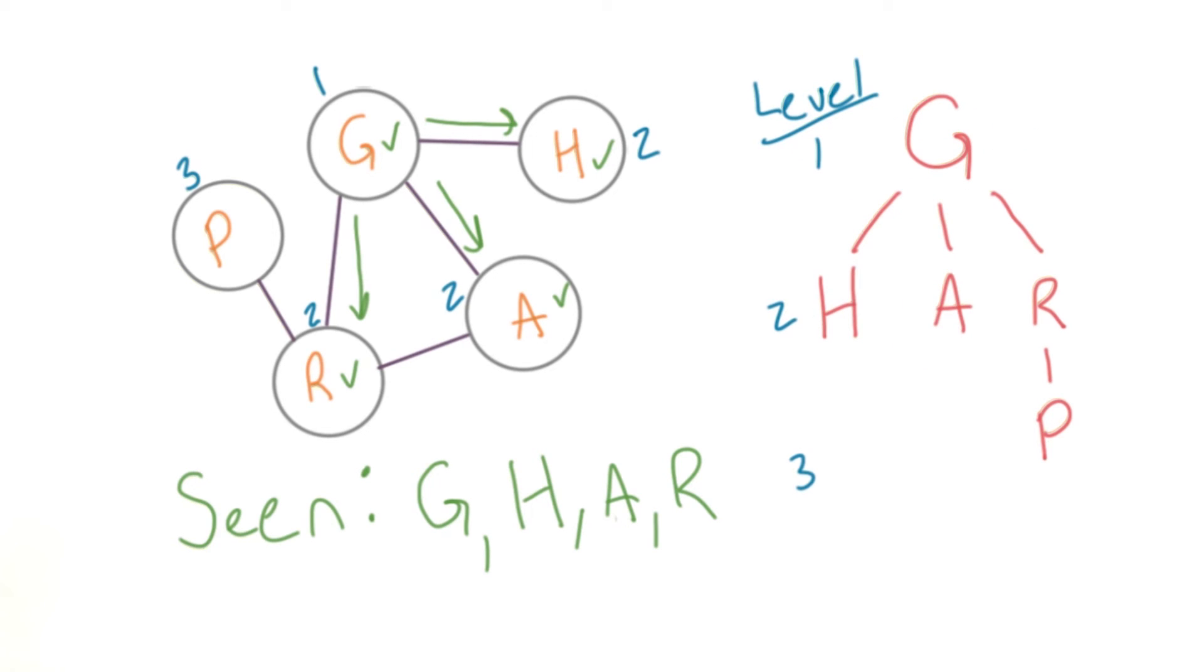You can kind of envision a BFS as creating a tree out of a graph. The node that we started with becomes the root. The group of adjacent nodes is the next level in the tree.